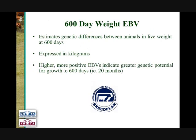The breed plan 600 day weight EBVs provide estimates of genetic differences between animals in live weight at 600 days of age. They are expressed in kilogram units, with higher, more positive 600 day weight EBVs indicating greater genetic potential to growth to 600 days of age, or around 20 months of age.